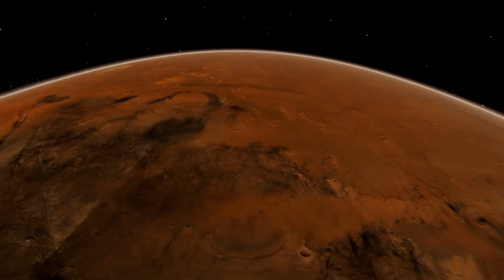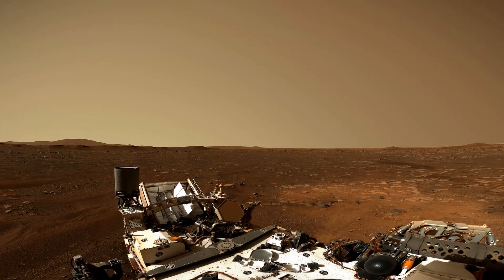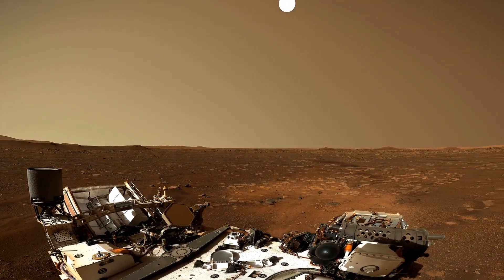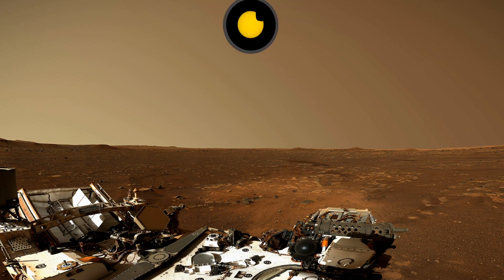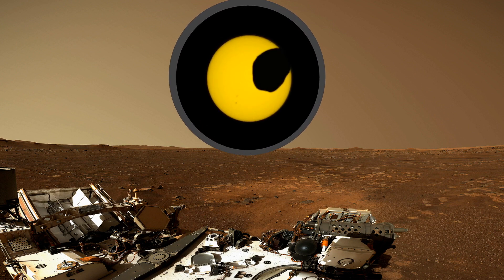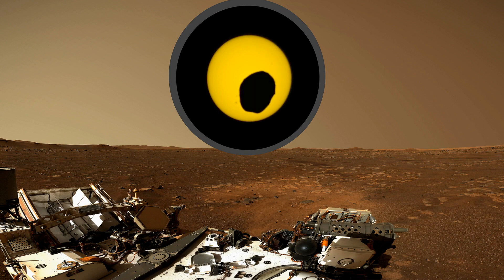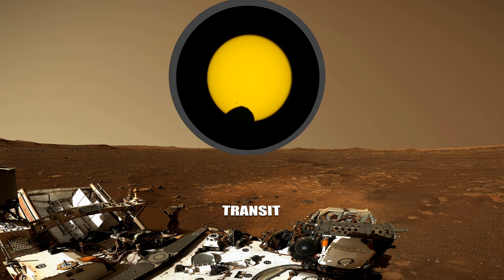The Perseverance rover explores an ancient Martian crater called Jezero. Its high-resolution camera surveys the Martian terrain and can also photograph the sun. On April 2, 2022, Perseverance was in the right place at the right time to capture the potato-shaped Phobos crossing in front of the sun. Phobos measures just 17 miles in diameter. Earth's moon is over 150 times larger. When a much smaller object moves across a larger body, like Phobos crossing the sun, we call it a transit, not an eclipse.